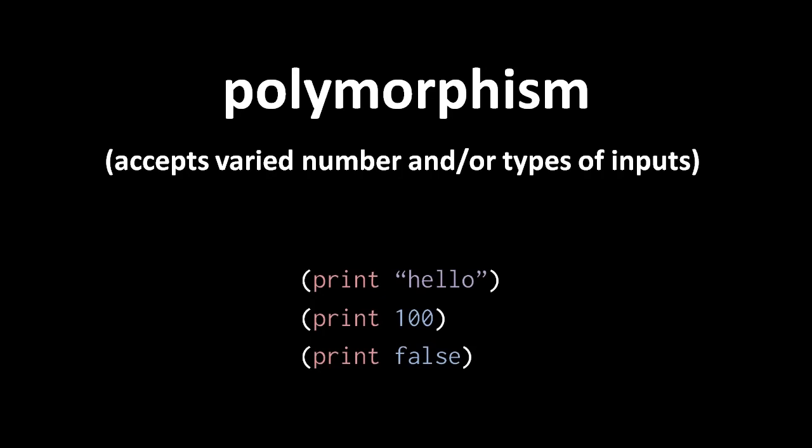In programming, the term polymorphism refers to the ability of an operation or function to accept a varied number of inputs and or varied types of inputs, and possibly change its behavior in these different cases. For example, in Pidgin, the print operator is polymorphic in that it accepts different types of inputs.